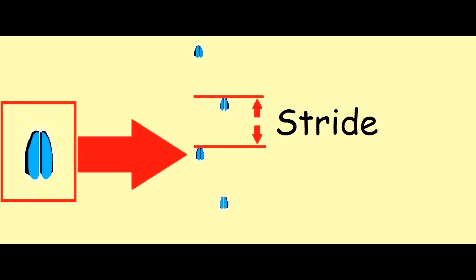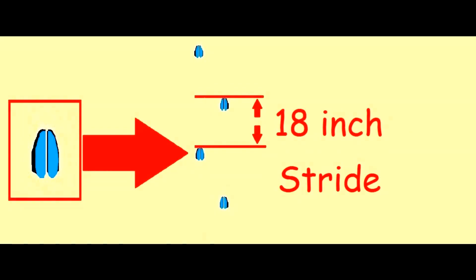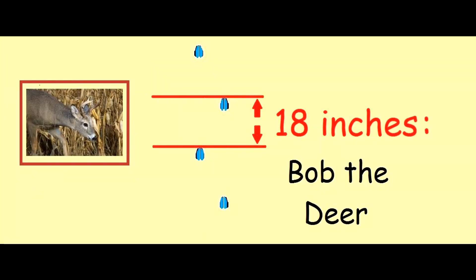This is how this works. Let's say we found the set of tracks from a deer. It's in direct register and showing the diagonal walking pattern. When we measure the tip of one of the hooves to the tip of the very next hooves, it shows an 18-inch stride. We can now name this 18-inch stride as Bob the Deer.